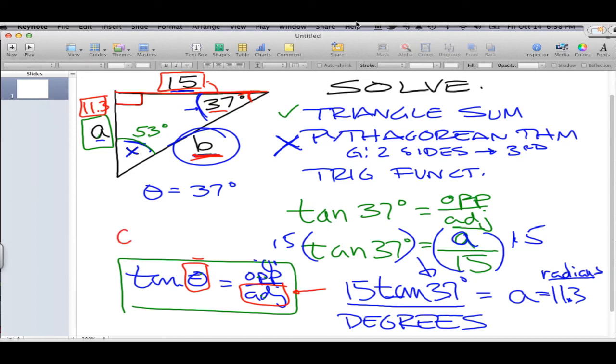So, now that A is 11.3, how could we get a value for B? Well, you can do the same thing and use cosine instead in conjunction with the adjacent side, the angle and find the hypotenuse. Or, you can choose to use Pythagorean theorem, because now you have the length of both legs and you can use Pythagorean theorem now to find the length of the hypotenuse.